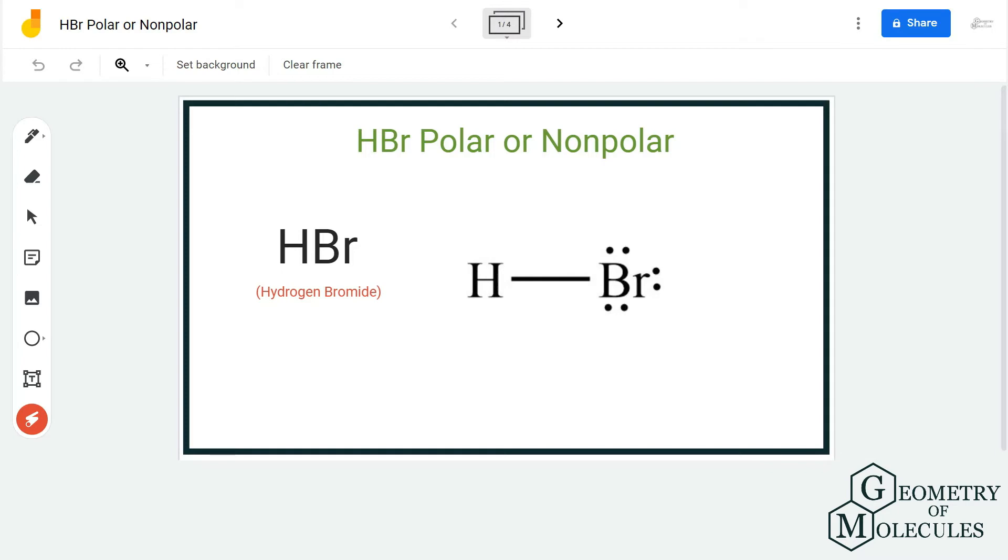If you look at its Lewis structure, it is quite simple as it is made up of only one hydrogen atom and one bromine atom. If you look at its shape, it's linear because there are only two atoms involved.